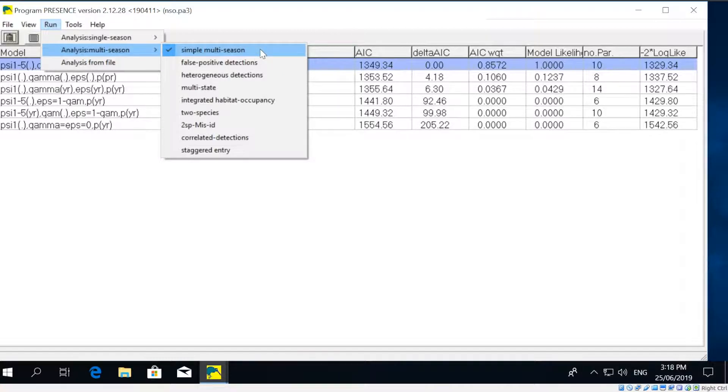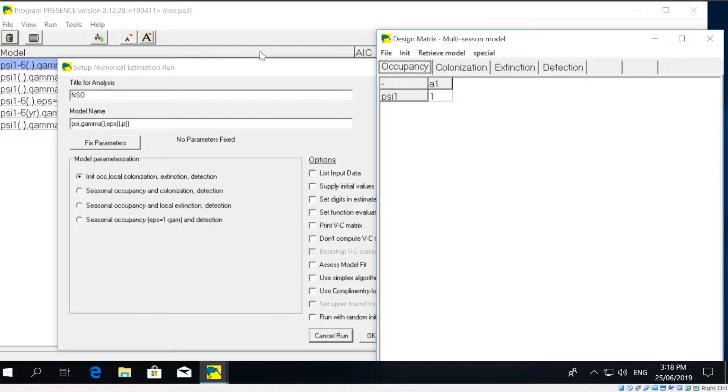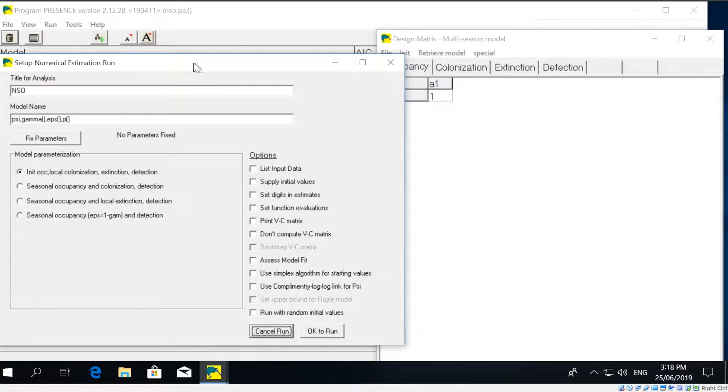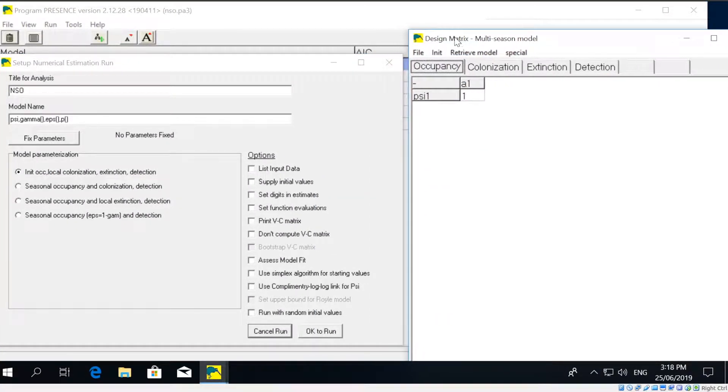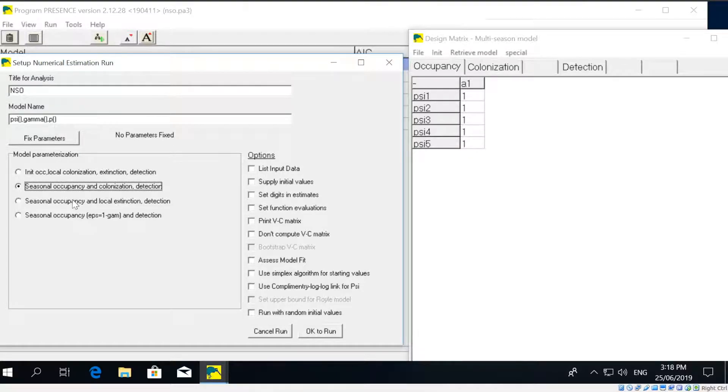And then the first thing we need to do is, if we want to fit a model where we have a different occupancy probability each year, we need to select one of these alternative parameterizations. So instead of the standard or initial parameterization that is there by default in Presence, we can select either the second or third parameterization. Here I'm selecting the second parameterization.